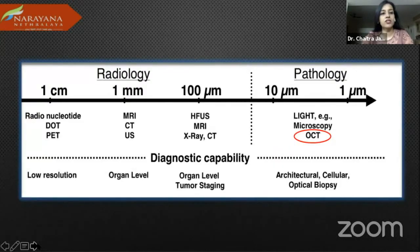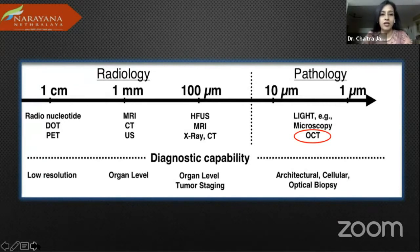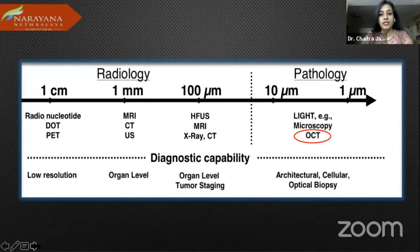I have no financial disclosures. We are very familiar with radiological investigations, be it PET scan or MRI. But what is the differentiation between OCT and all of these? Those are of diagnostic capability but are low resolution and at an organ level. Whereas the biggest advantage of OCT is that it gives us imaging even at a cellular level — it's literally like an optical biopsy.